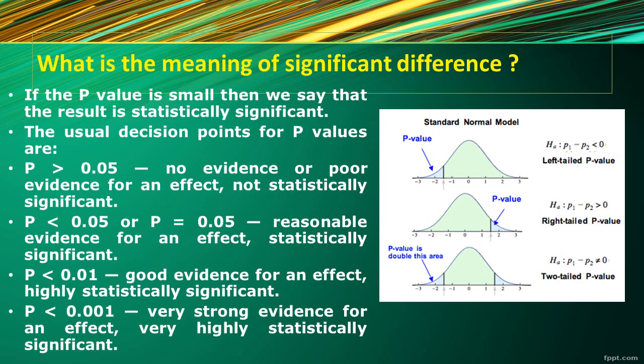If p is less than 0.05, it means reasonable evidence of effect and it is statistically significant, meaning there is a significant relationship between variables. P less than 0.01 indicates good evidence of effect and a statistically significant relationship between variables. P less than 0.001 suggests very strong evidence for effect and a very highly significant relationship between variables exists in the research study.